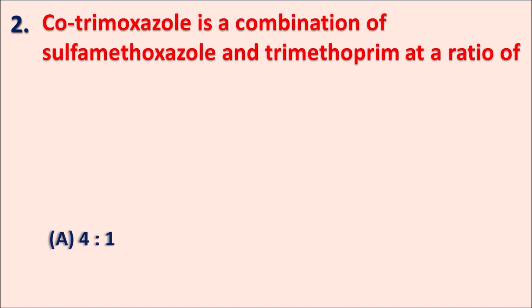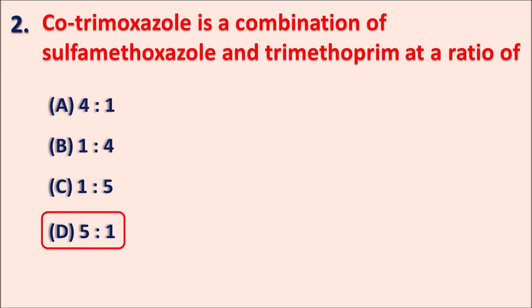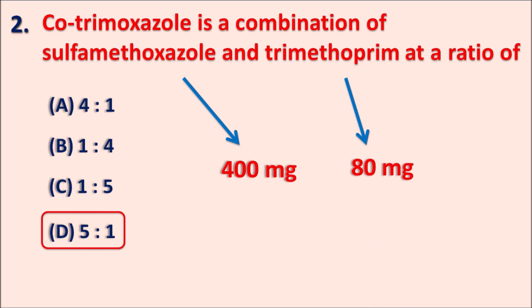Question two: Cotrimoxazole is a combination of sulfamethoxazole and trimethoprim at a ratio of — A: 4:1, B: 1:4, C: 1:5, D: 5:1. The right answer is 5:1. Sulfamethoxazole is given at 5 parts and trimethoprim at 1 part — for example, 400 mg sulfamethoxazole with 80 mg trimethoprim. A double-strength formulation uses 800 mg sulfamethoxazole with 160 mg trimethoprim. Cotrimoxazole is used to treat urinary tract infections and pneumonia, particularly in immunocompromised patients.